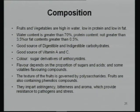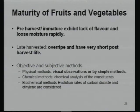Phenolic compounds provide astringency, bitterness, and aroma, and also provide resistance to pathogens and stress — that is why fruits are called protective foods. Regarding maturity: early harvesting causes flavor loss and rapid moisture loss, while late harvesting results in overripe fruit with short post-harvest life. There are three methods to assess maturity: physical, chemical, and biochemical.